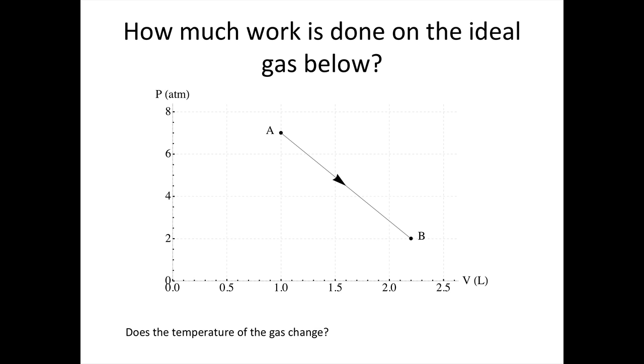So here's a problem for you to try. Work out how much work is done on the ideal gas below. So it's going from state A here, which is at seven atmospheres, to state B here at two atmospheres. And it changes, the volume changes from one litre at A to 2.2 litres at B. Once you've answered that, have a think about, does the temperature of the gas change during this process?